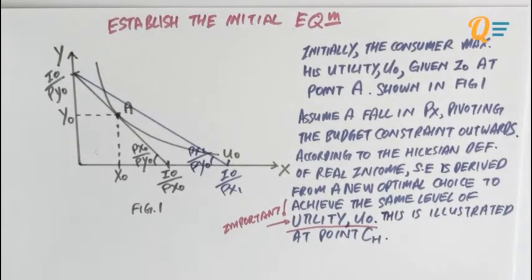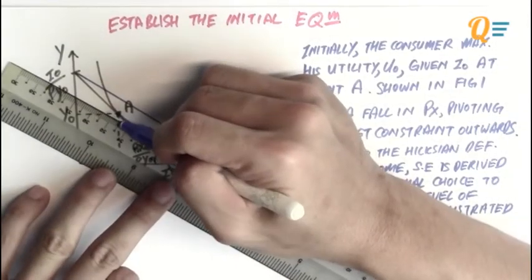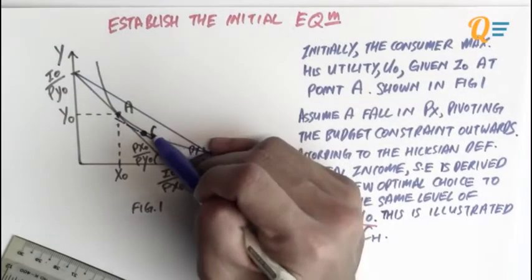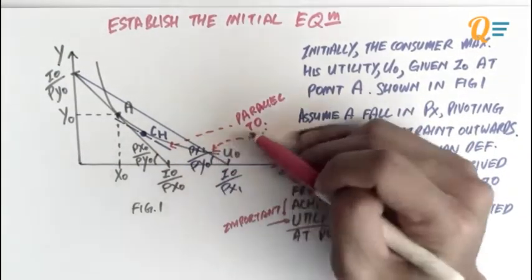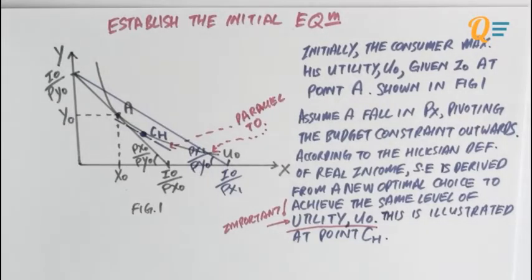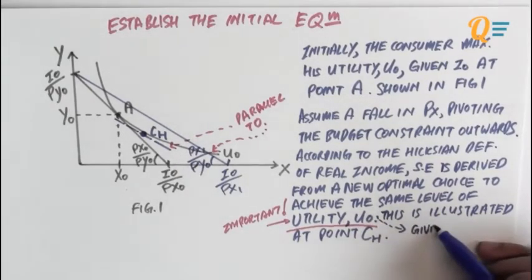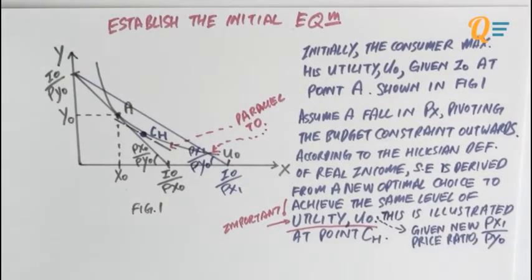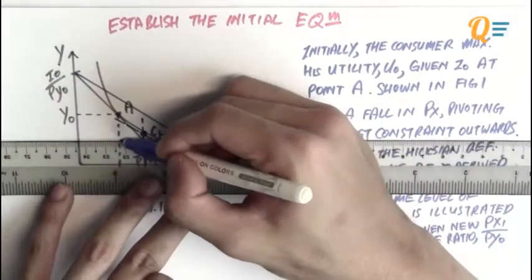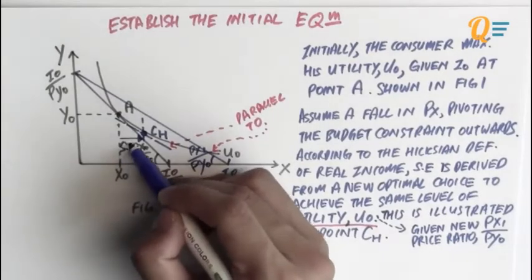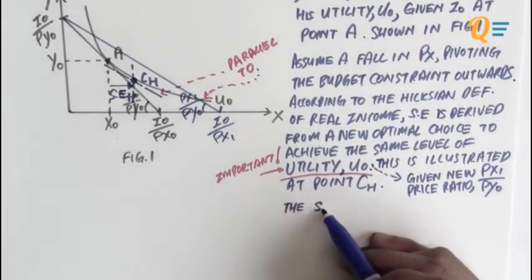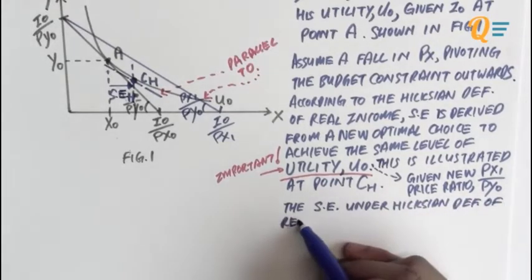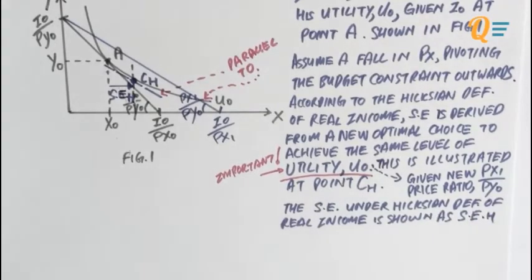This is important because it tells you that you have to be on the same utility curve. Therefore, I'm going to draw an imaginary budget line that is tangent to the old indifference curve — that's going to be point CH. Notice that the imaginary budget line is parallel to the new budget line. I'm going to add this into the sentence: given a new price ratio PX1 over PY0. The substitution effect under the Hicksian definition of real income is shown as SEH in figure 1.